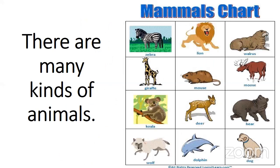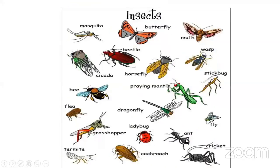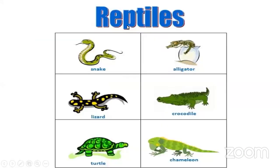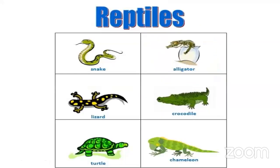There are mammals like zebra, lion, giraffe, dolphin, dog — these animals are called mammals. And then there are insects like mosquito, butterfly, moth, termite, cricket, and there are so many insects. And then we come to reptiles.